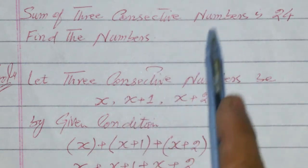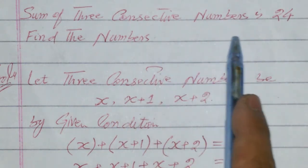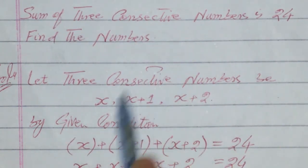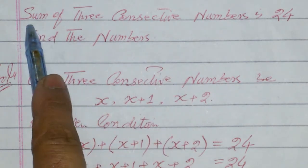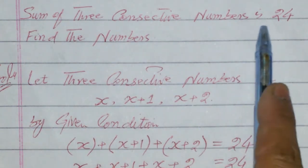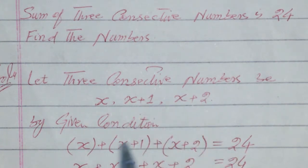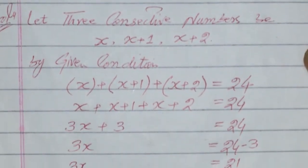The condition is that the sum of these consecutive numbers is 24. By the given condition, the sum is 24, so we can write the equation to calculate the numbers.